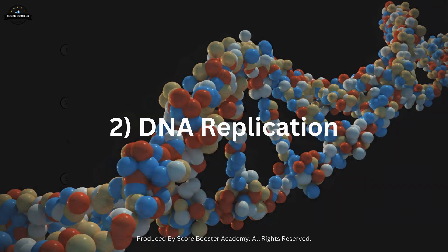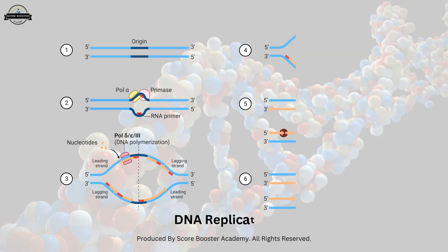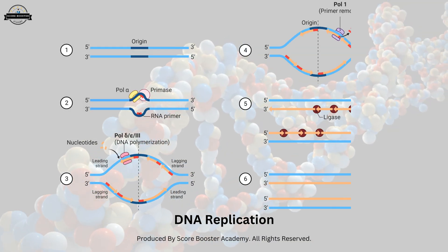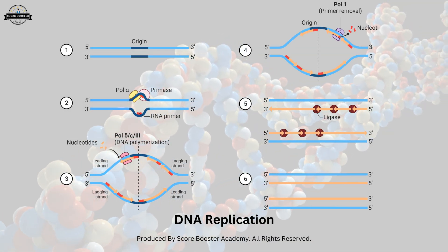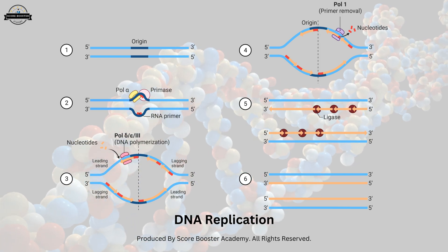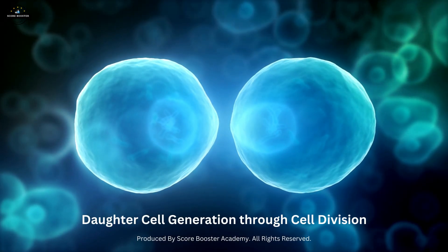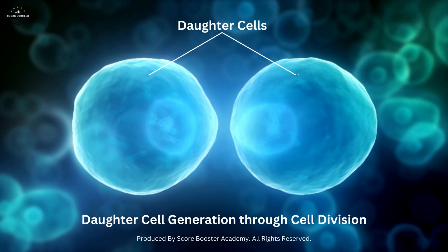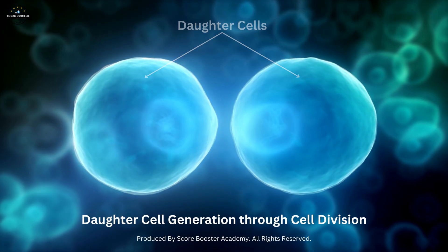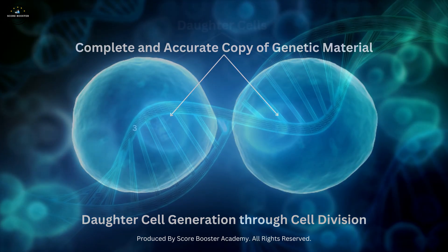DNA replication. Before a cell divides, it must duplicate its DNA through a process called DNA replication. This ensures that each daughter cell receives a complete and accurate copy of the genetic material.